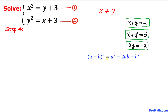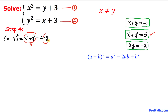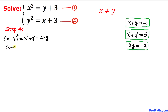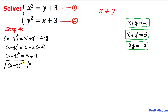Now let's recall the formula for a minus b squared. In terms of x minus y squared, this equals x squared plus y squared minus 2 times xy. Replacing x squared plus y squared with 5 and xy with negative 2, we get x minus y squared equals 5 minus 2 times negative 2, which equals 9. Taking the square root of both sides, x minus y equals positive or negative 3.